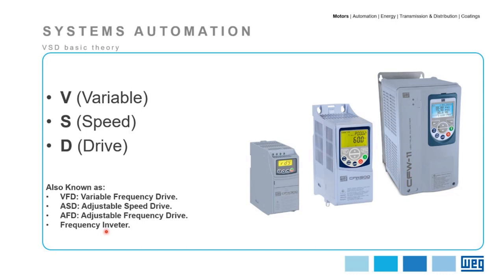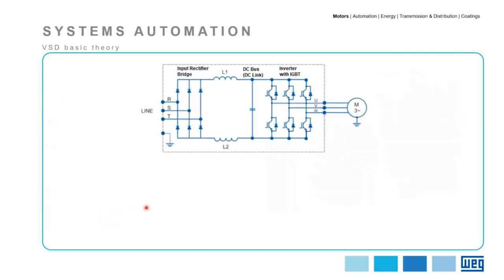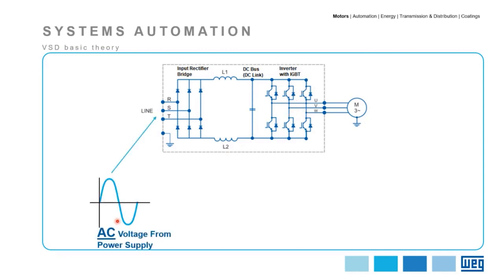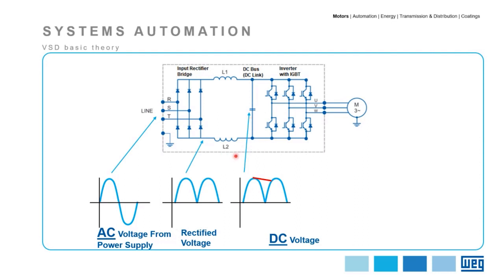The construction of a typical low voltage six-pulse VSD can be divided into three main parts: the input rectifier bridge, the DC bus or DC link, and the inverter unit. The AC input voltage passes through the rectifier unit, producing a DC voltage. However, this DC voltage has ripples, and therefore the capacitors from the DC link smooth out these ripples. As a consequence, a clean DC voltage is available to the inverter section.